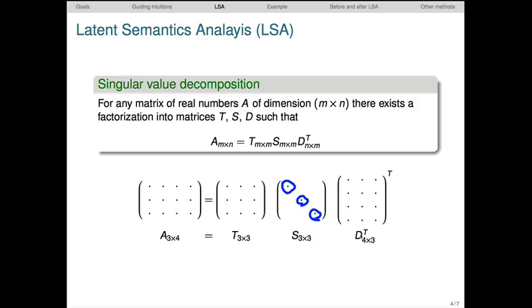For example, if we want to truncate to two dimensions, taking a row-wise perspective, then we multiply this submatrix here by these two singular values. This results in a three-by-two matrix in this case.